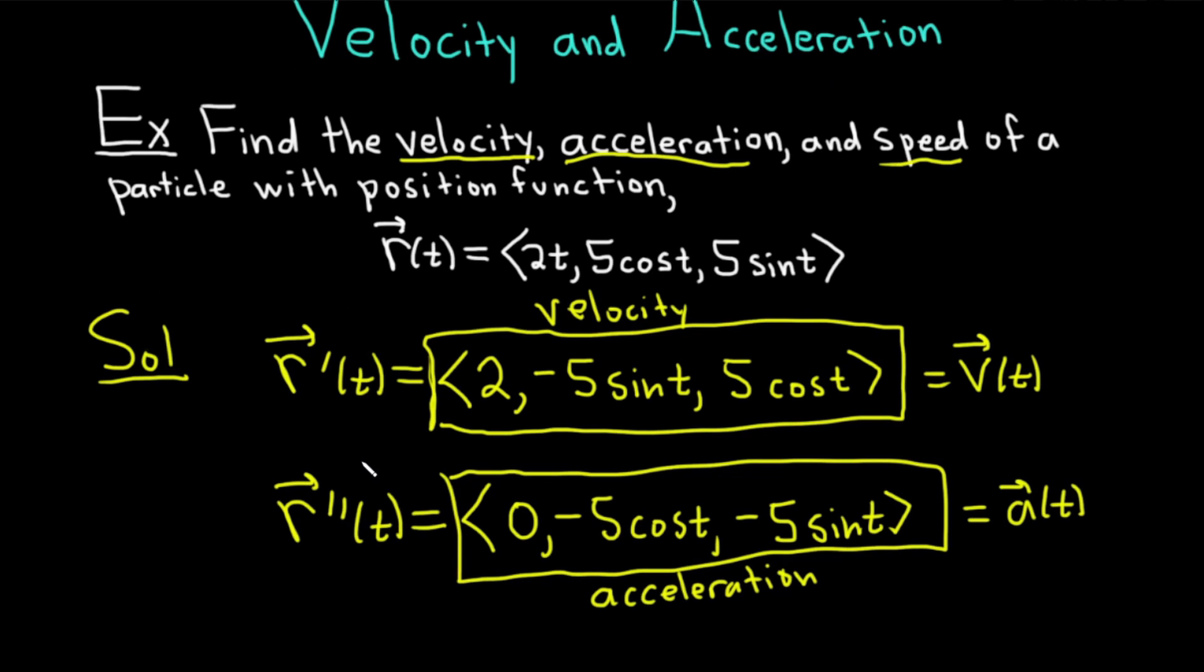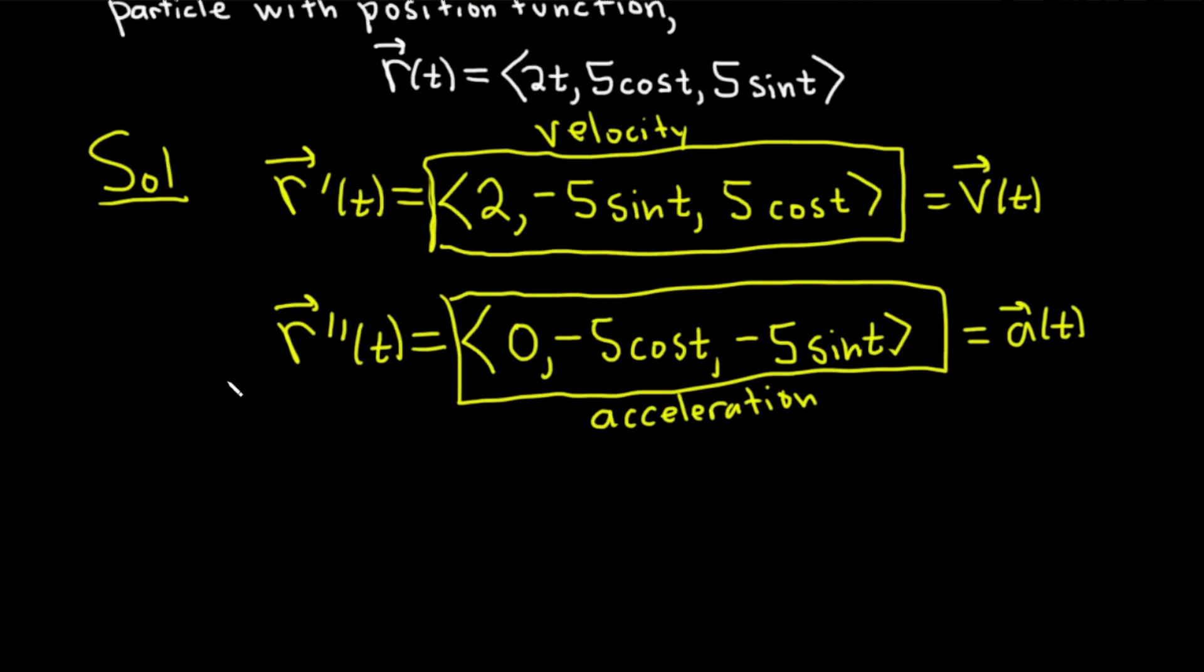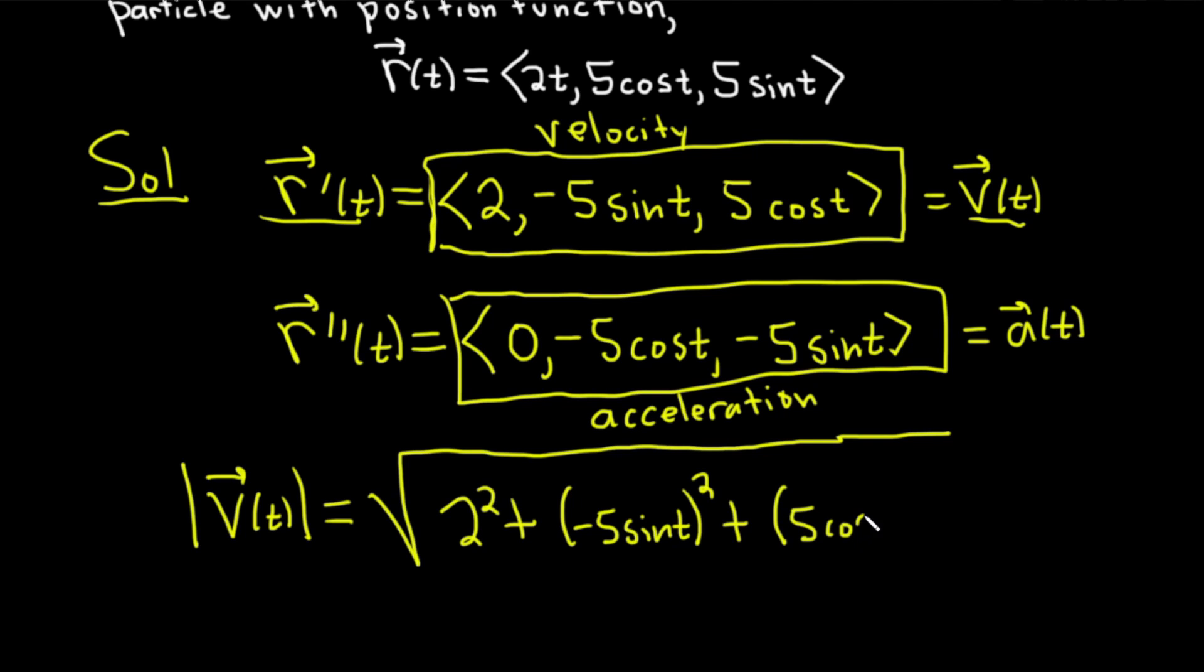Now we have to find the speed. So the speed is actually the magnitude of the velocity. So it's the magnitude of the velocity function. I called it... it's the same thing as r', but I decided to use the velocity function notation this time. This is equal to... To find the magnitude, you take the square root, and then you just square each of the components. So it'll be 2², plus... squaring -5sin(t), we have (-5sin(t))², plus (5cos(t))².